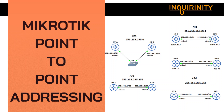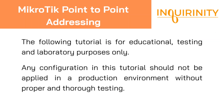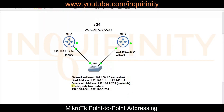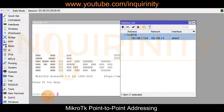Let's begin and provide some backstory for our video on MikroTik point-to-point addressing. Here we have two routers, MTA and MTB, using the typical slash 24 subnet mask or 255.255.255.0. So for our MTA that will be 192.168.1.1/24, and for our MTB that will be 192.168.1.2/24.